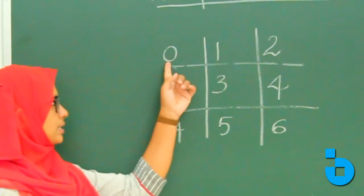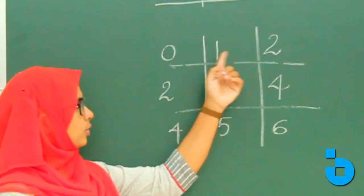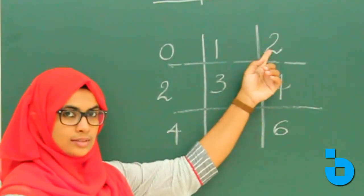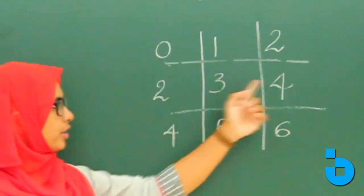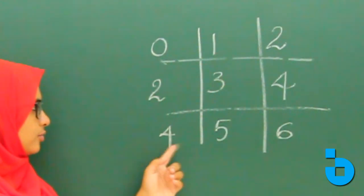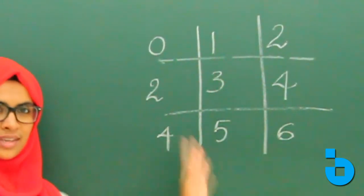We will take the table again. The pattern is: 0, 1, 2 — then 2 is repeated here — 2, 3, 4 — again 4 is repeated — 4, 5, 6.